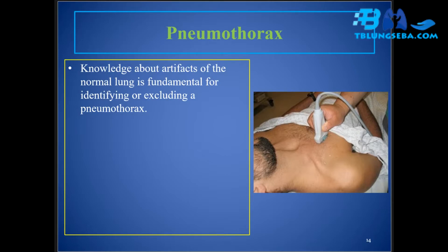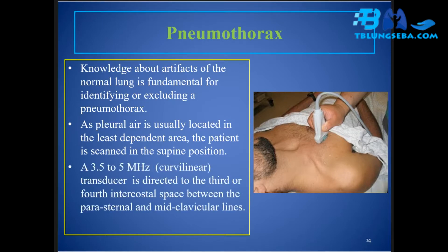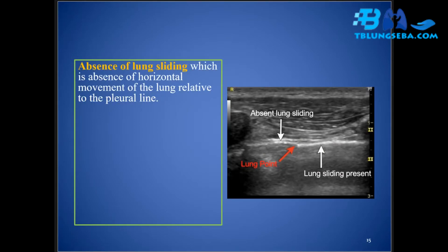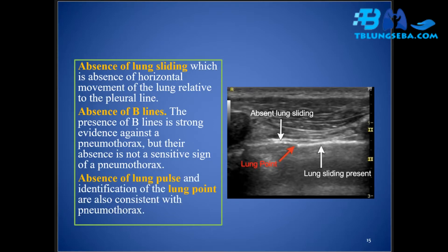Knowledge about artifacts of the normal lung is fundamental for identifying or excluding pneumothorax. As pleural air is usually located in the least dependent area, the patient is scanned in the supine position using a 3.5 to 5 megahertz curvilinear transducer directed to the third or fourth intercostal space between the parasternal and mid-clavicular lines. Key signs include absence of lung sliding, absence of B-lines — the presence of B-lines is strong evidence against pneumothorax — absence of lung pulse, and identification of the lung point.